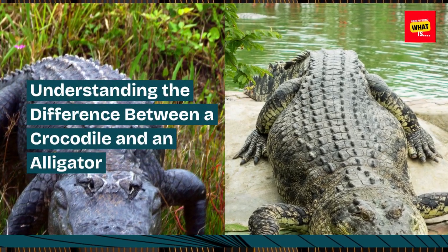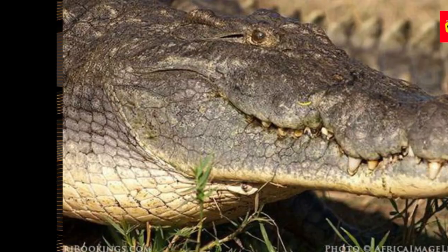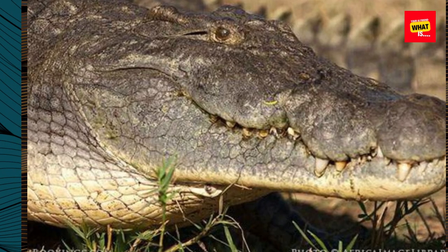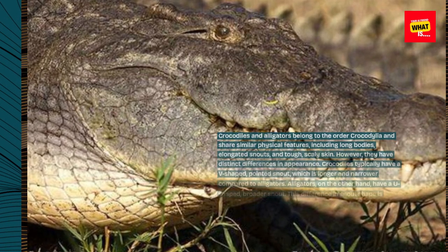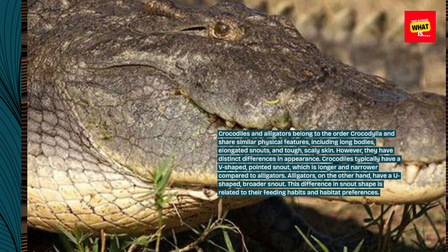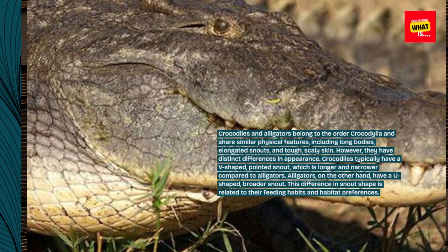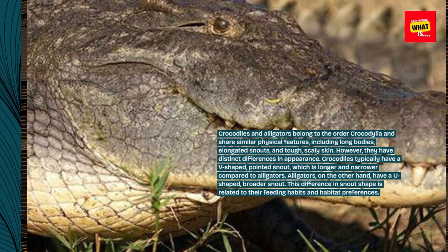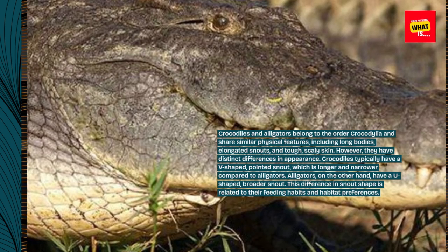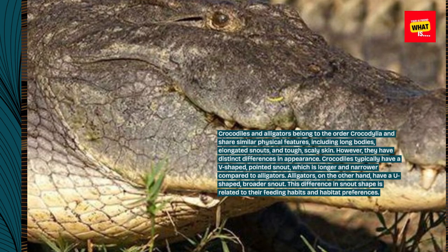Understanding the Difference Between a Crocodile and an Alligator. Physical Appearance: Crocodiles and alligators belong to the order Crocodilia and share similar physical features, including long bodies, elongated snouts, and tough, scaly skin. However, they have distinct differences in appearance. Crocodiles typically have a V-shaped, pointed snout, which is longer and narrower compared to alligators. Alligators, on the other hand, have a U-shaped, broader snout. This difference in snout shape is related to their feeding habits and habitat preferences.